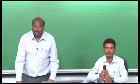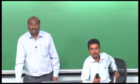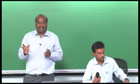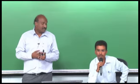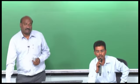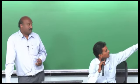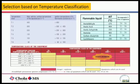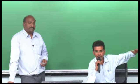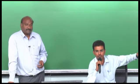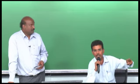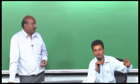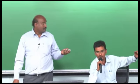When selecting equipment, three things must be considered: what is the zone, what is the AIT of the flammable liquid or solvent being handled, and what is the gas group. If handling multiple solvents, select based on the minimum AIT — whichever chemical has the least auto ignition temperature determines the equipment selection. For petrol or diesel, AIT is around 200 degrees, so normally equipment of T4 or T5 is selected.